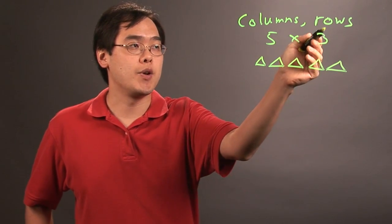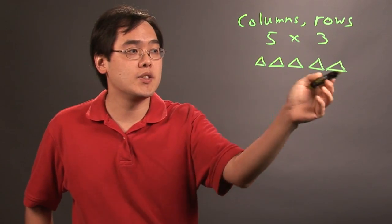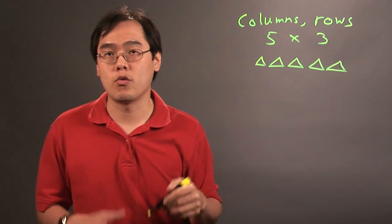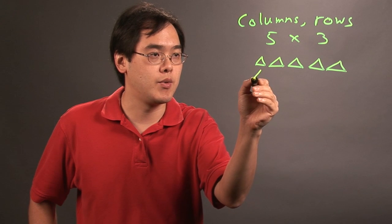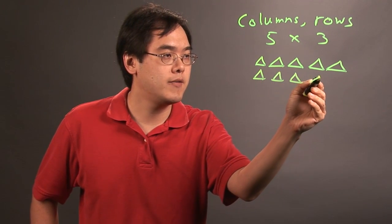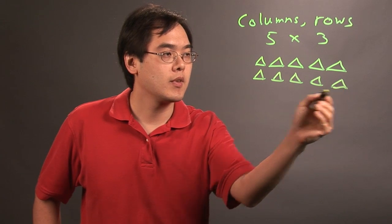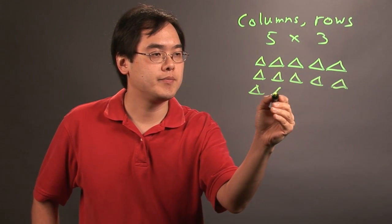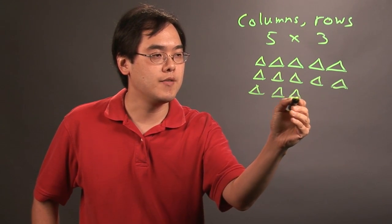Now in terms of three rows, we're just going to write this two more times for a total of three rows. So we're going to write row number two of five triangles and row number three of five triangles.